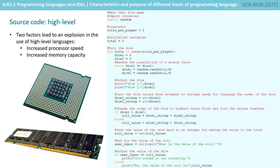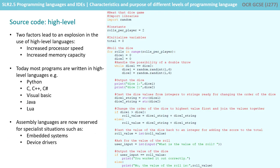As central processing units became faster and memory capacity increased, there was less need to interact with the hardware directly, and the growth of different high-level programming languages for different purposes exploded over the next 60 years. In personal computers, assembly was still used to create games because code needed to execute quickly and use memory very efficiently, whereas other programs where speed was not so critical could be programmed in high-level languages such as Basic.